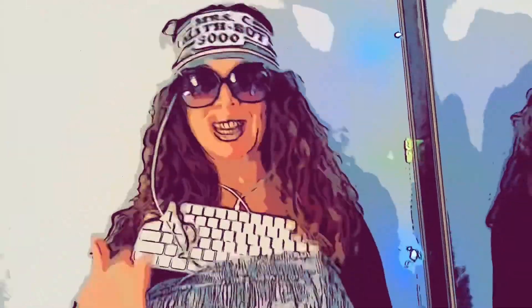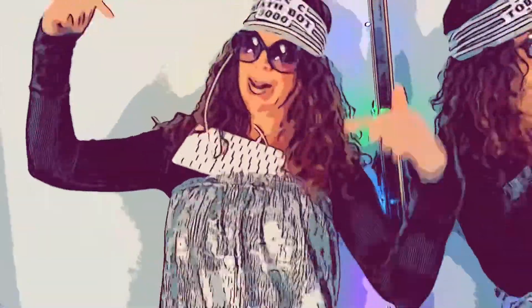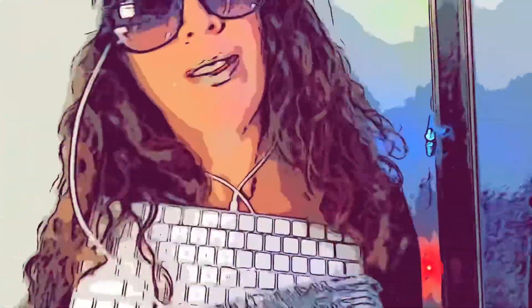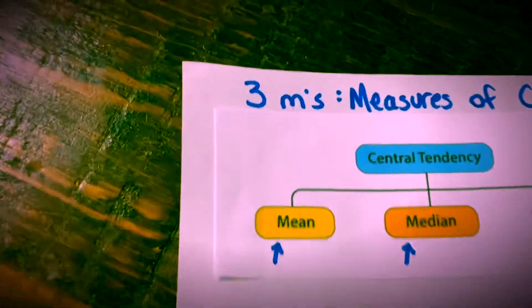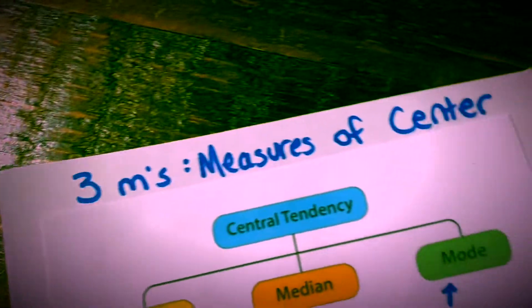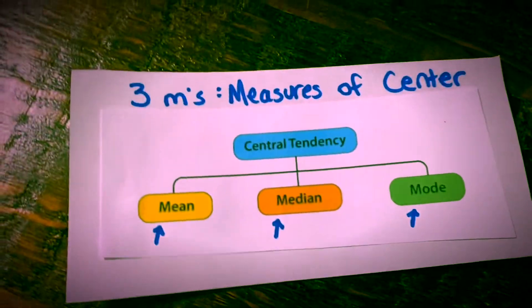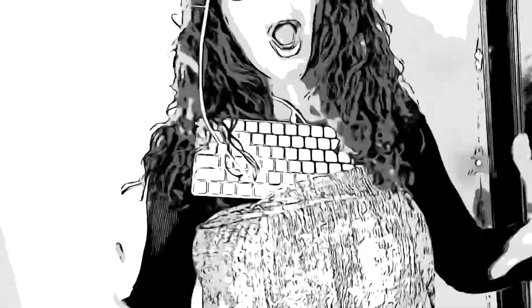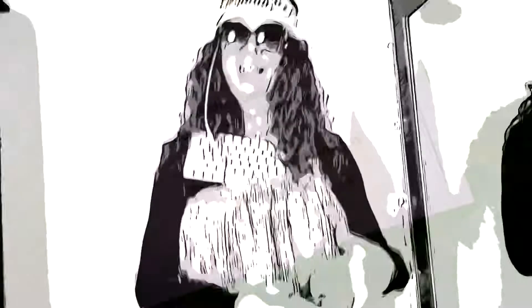Don't you worry about that — gonna analyze data with Miss C, feeling really good in the place to be. Gonna break it on down in this side of town. Figure out the mean with your math queen, do all the rest 'cause we're feeling best. Now let's break it down. Let's begin with the three M's — measures of center will be your friends.